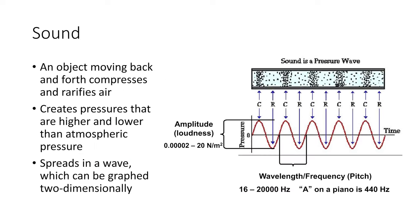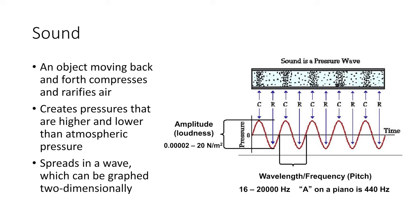Sound is produced by objects moving back and forth, compressing and rarefying air. This process creates pressures that are higher and lower than atmospheric pressure, which then spread in a wave that can be graphed in two dimensions. These pressure waves have an amplitude — the size of the wave representing volume — and a wavelength or frequency that is the pitch.